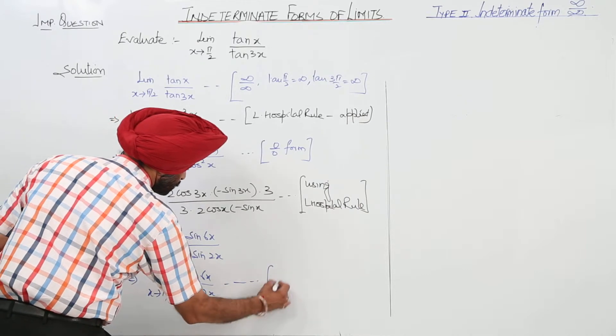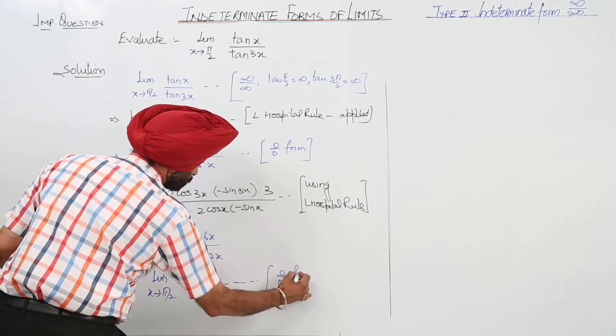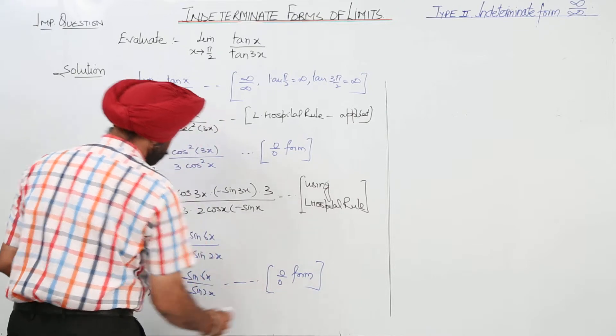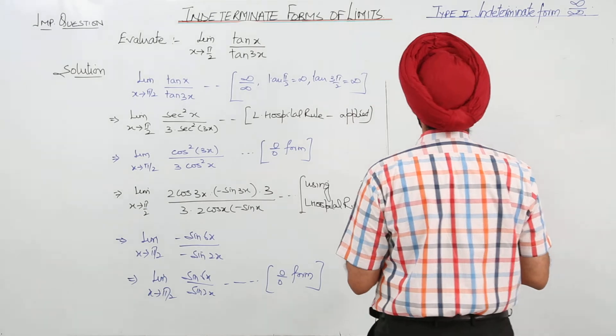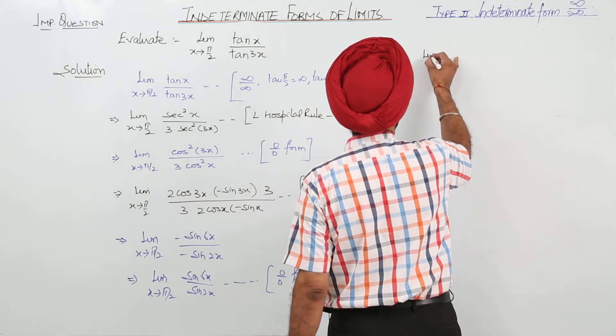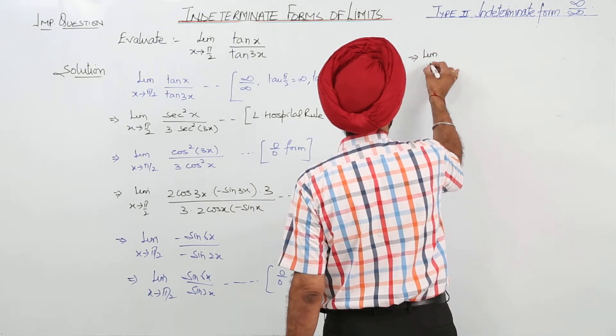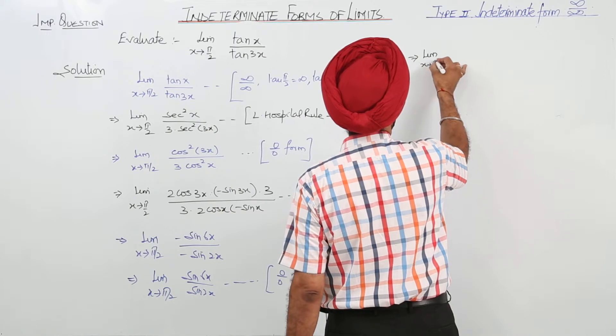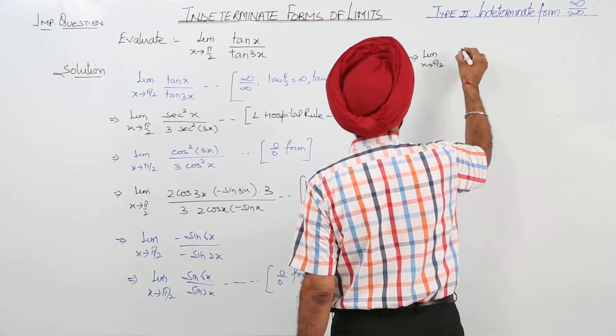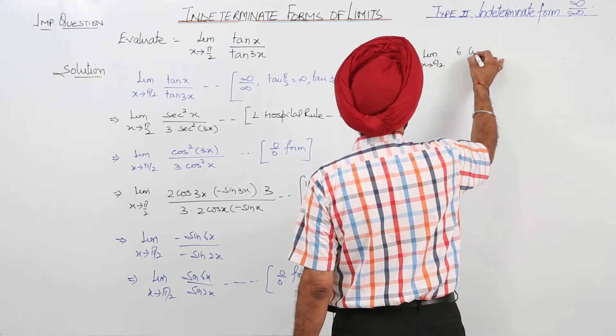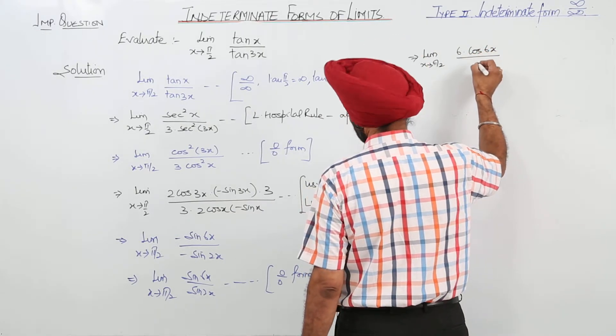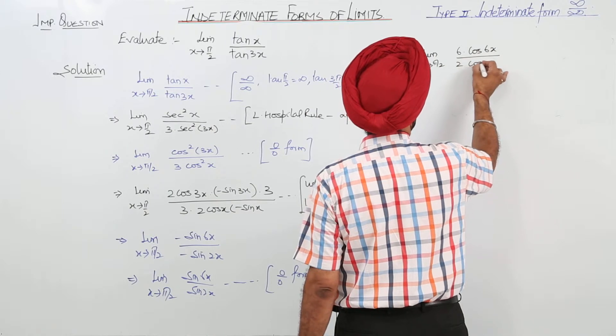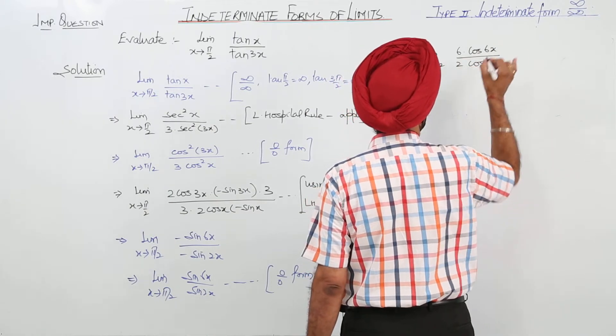Again, this is 0 upon 0 form. Now, applying L'Hôpital's rule: limit 6cos(6x) upon 2cos(2x).